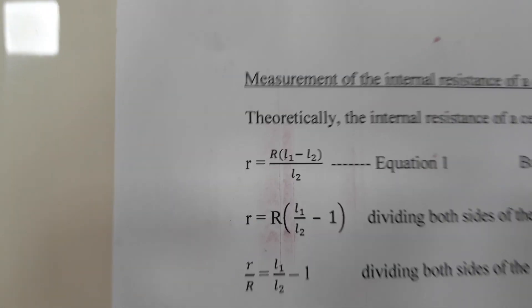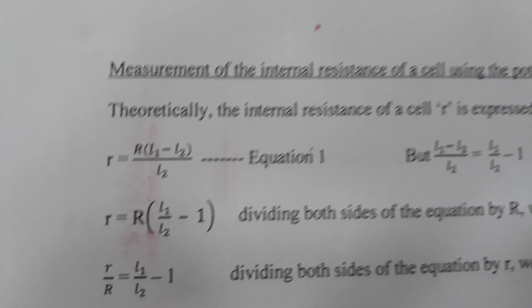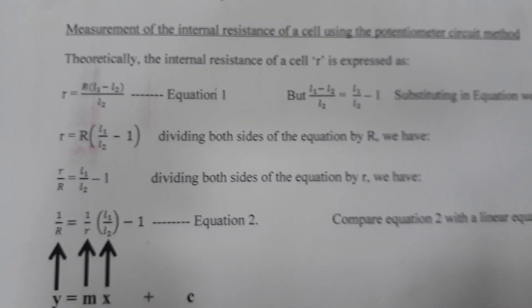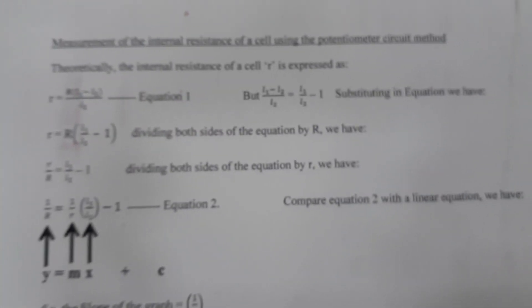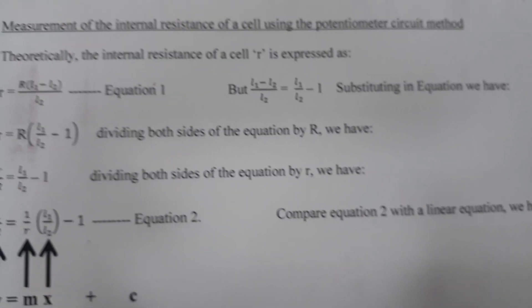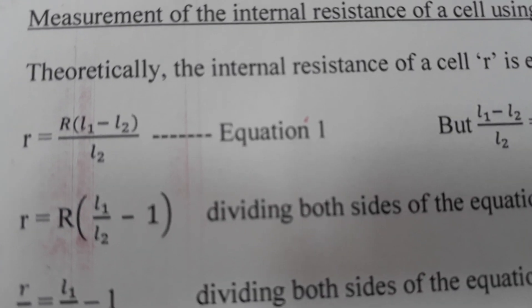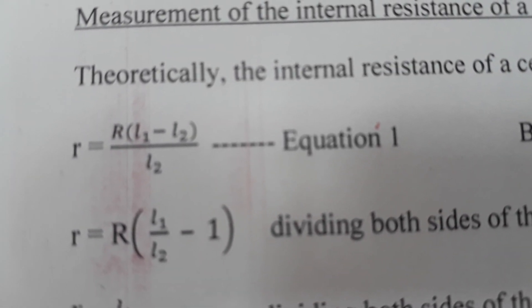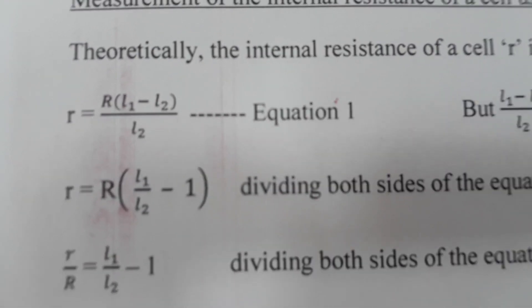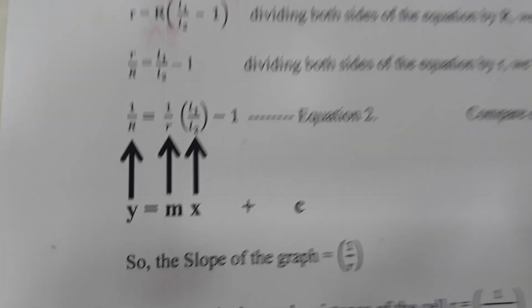Now, for me to understand what I have to plot, I have to linearize this equation. You can see that the equation of the internal resistance is given as small r is equal to big R into L1 minus L2 all over L2. If you linearize it, you have that y is equal to mx plus c.